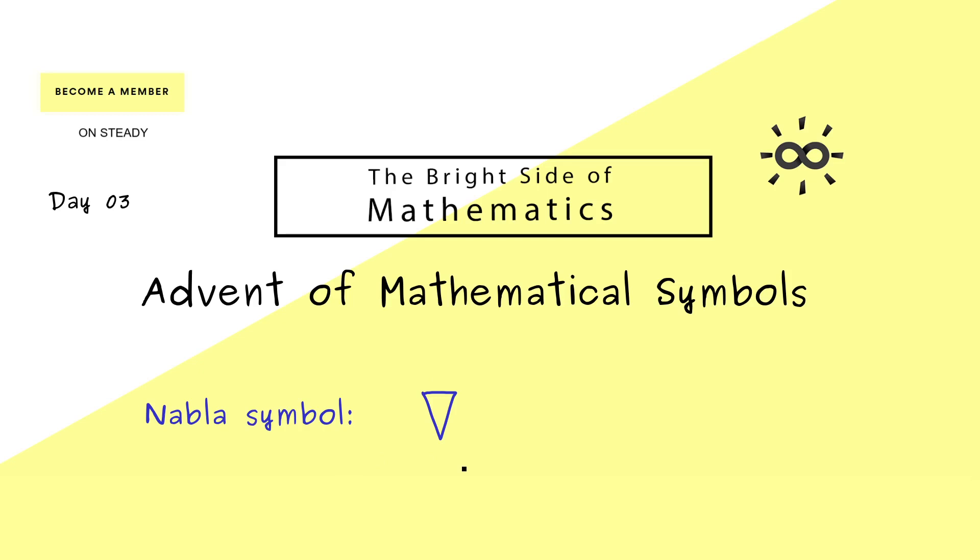The definition is not so complicated. It's just a vector where the components are given by derivatives. So first we have the partial derivative with respect to the first variable, maybe it's called x1.